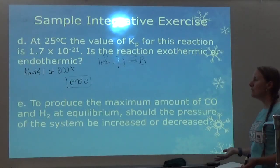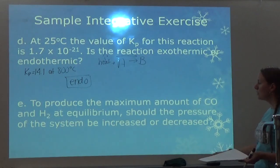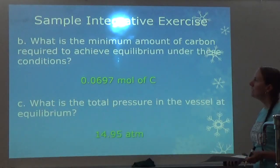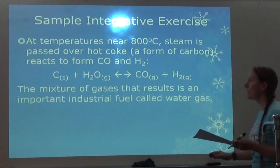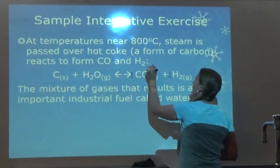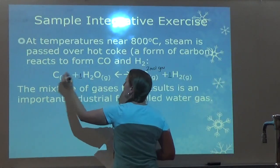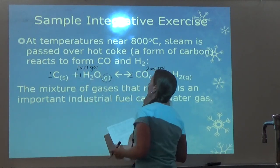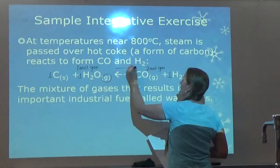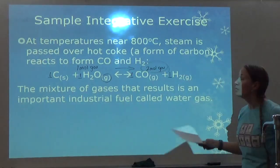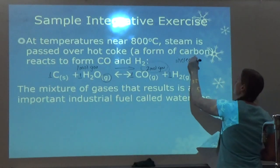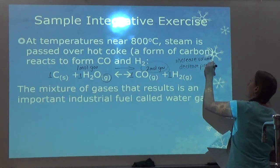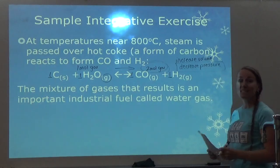Last part: to produce the maximum amount of CO and H2 at equilibrium, should pressure be increased or decreased? On the product side there are two moles of gas; on the reactant side there is only one mole of gas. If I want more products, I need more room for more moles of gas, which means decreasing pressure. So we would want to decrease pressure.